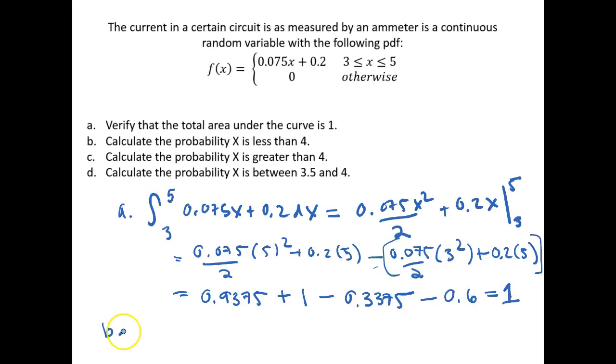So the second question asks, calculate the probability x is less than 4. So this is the probability that x is less than 4. This is how we denote this. And we can find this by integrating from our lower bound up to our value of interest.